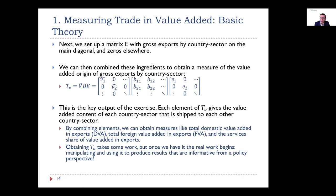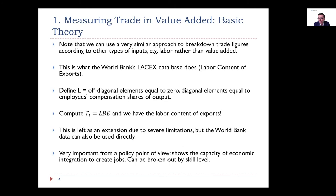We can then set up an export matrix — from the IO table we have both intermediate demand and final demand broken down by country, so we can separate exports from domestic transactions. Once we have that, we can obtain a measure of the value added origin of gross exports by country-sector by multiplying the value added coefficients matrix by the Leontief inverse, then by a matrix with exports on the diagonal. This matrix TV — the key output of the whole exercise — gives us the value added content of each country-sector shipped to each other country-sector.